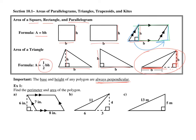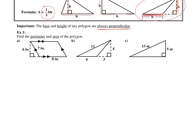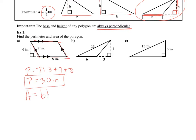Example 1: find the perimeter and area of the polygon. The perimeter is equal to 7 plus 8 plus 7 plus 8, which gives you 30 inches. Then for area, it's a parallelogram, so base times height: the base is 8 and the height is 6, giving us 48 inches squared.